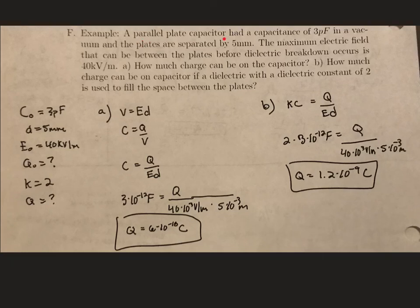So in this example, we have a parallel plate capacitor that has a capacitance of 3 picofarads in a vacuum. And the plates are separated by 5 millimeters. We know that the maximum electric field that can be placed between the plates before dielectric breakdown occurs is 40 kilovolts per meter.